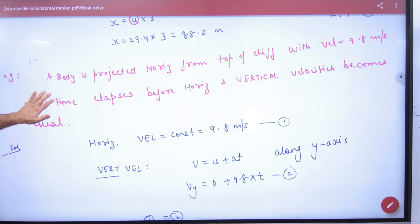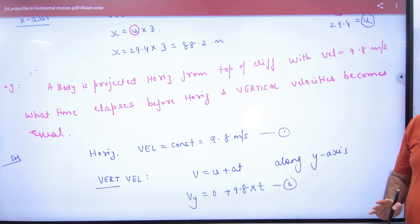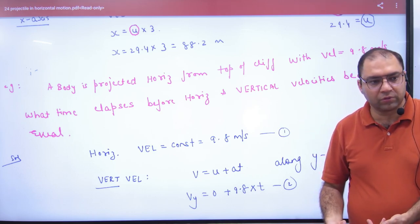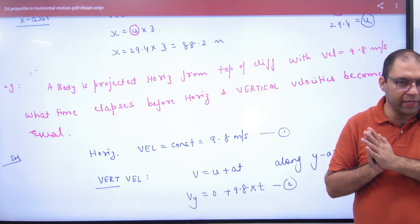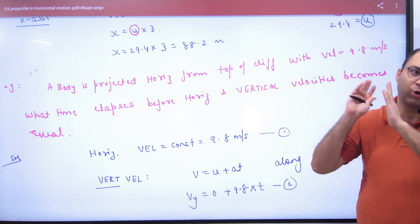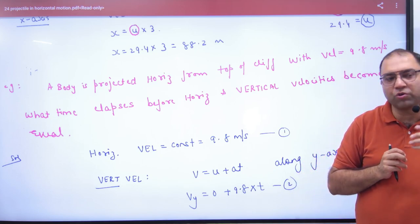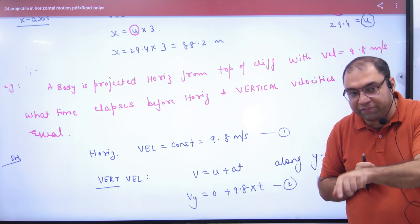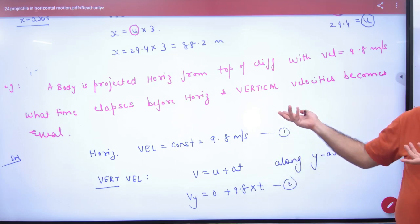Problem 2: A body is projected horizontally from the top of a cliff with a velocity of 9.8 m/s. What time elapses before the horizontal and vertical velocities become equal? A student said this will happen when the angle is 45 degrees. But it is already given directly that horizontal equals vertical — so we don't need to think about 45 degrees separately.